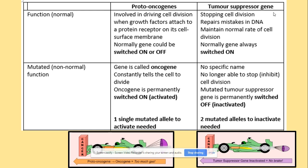When mutations occur — changes to the DNA sequence — proto-oncogenes become oncogenes and are permanently switched on, constantly telling the cell to divide. To mutate proto-oncogenes into oncogenes, we only need one single mutated allele. In terms of the tumour suppressor gene, we don't change the name — it's called a mutated tumour suppressor gene. If mutated, it no longer performs its normal job; it will no longer inhibit cell division — it is switched off and will not code for proteins that inhibit cell division. To inactivate a tumour suppressor gene, we need two mutated alleles.